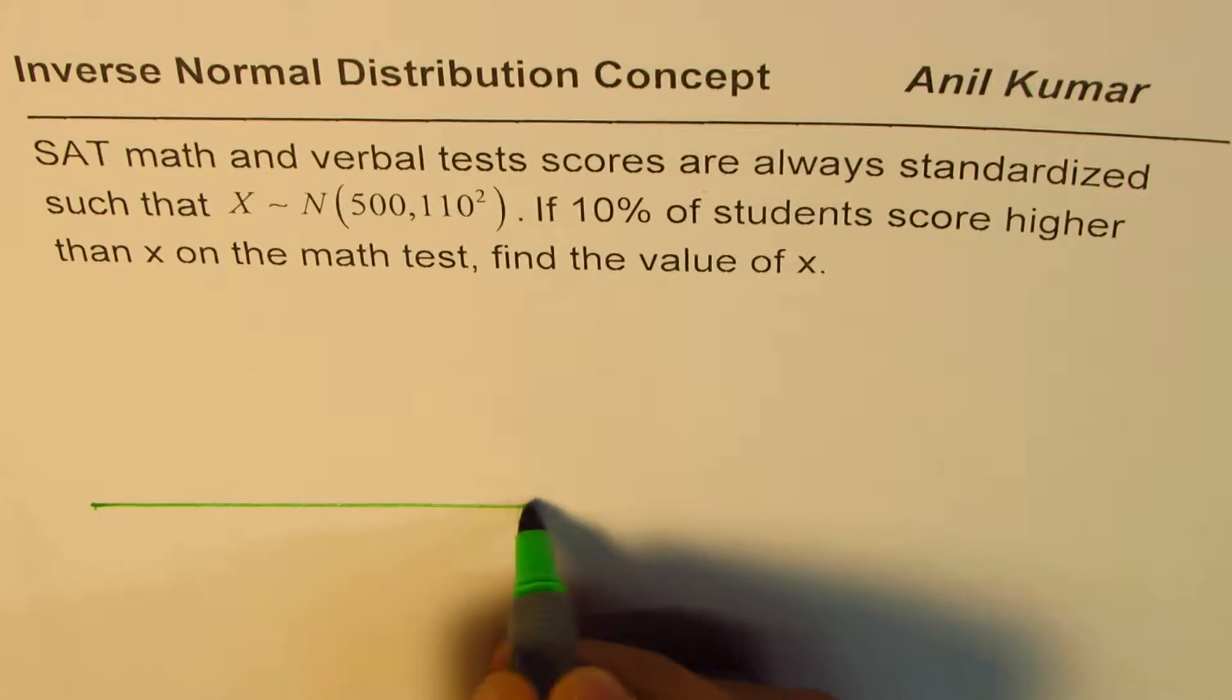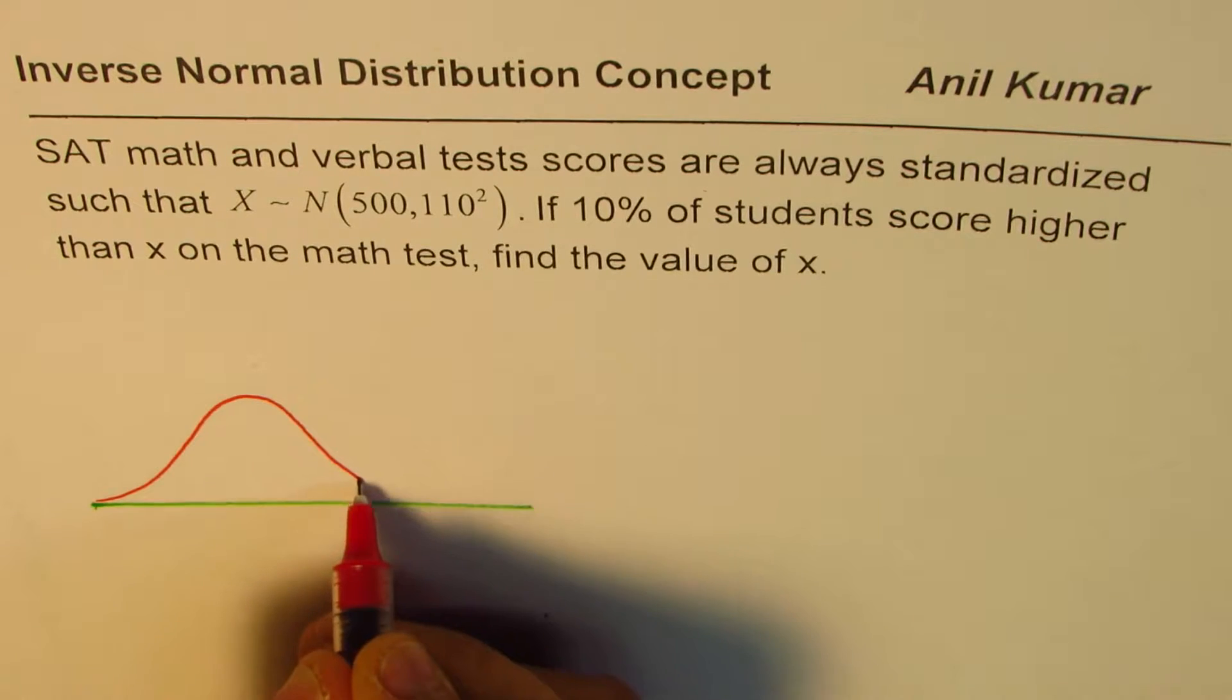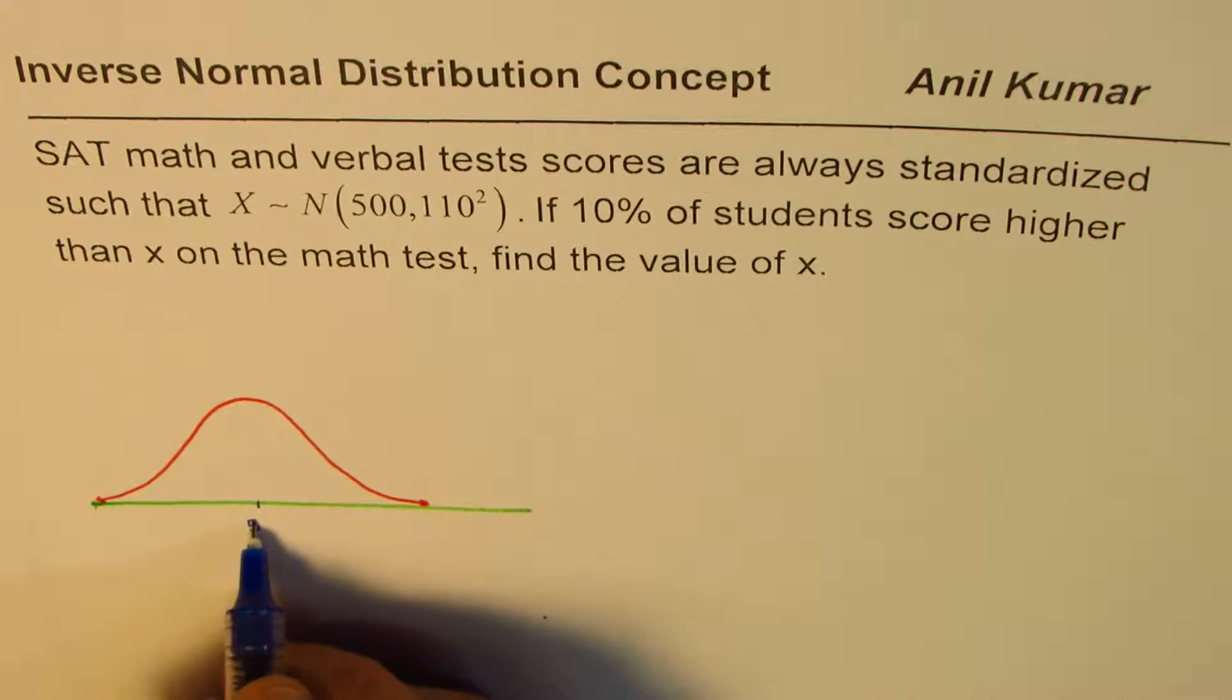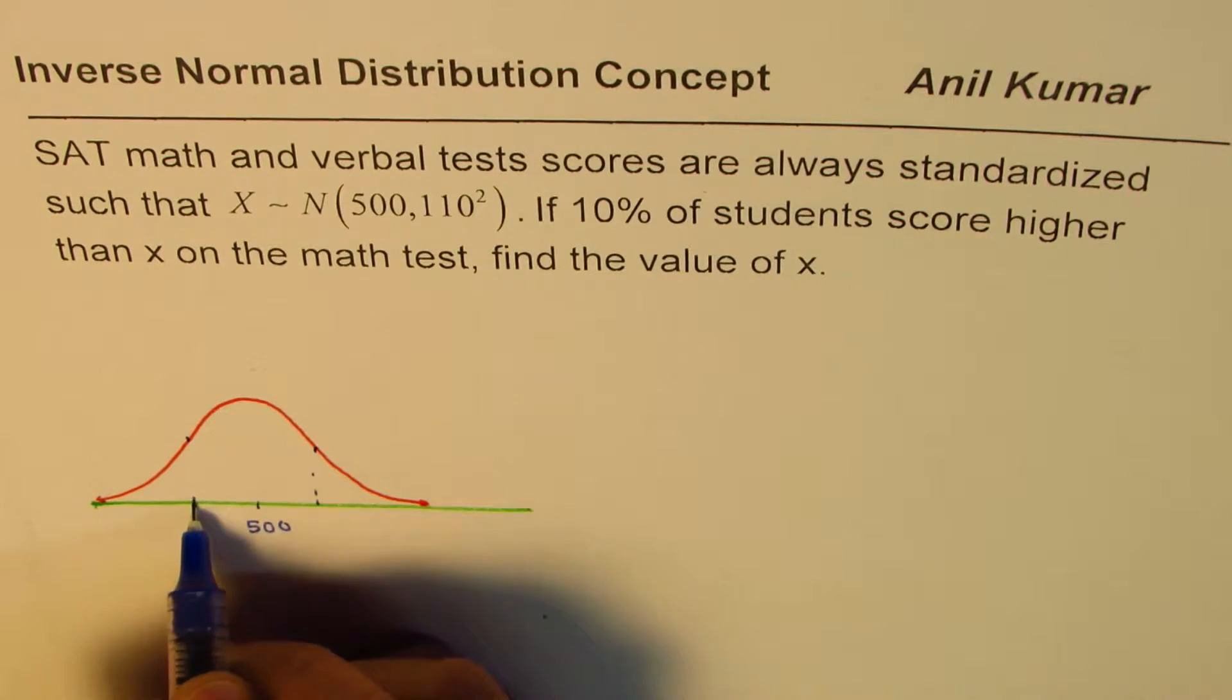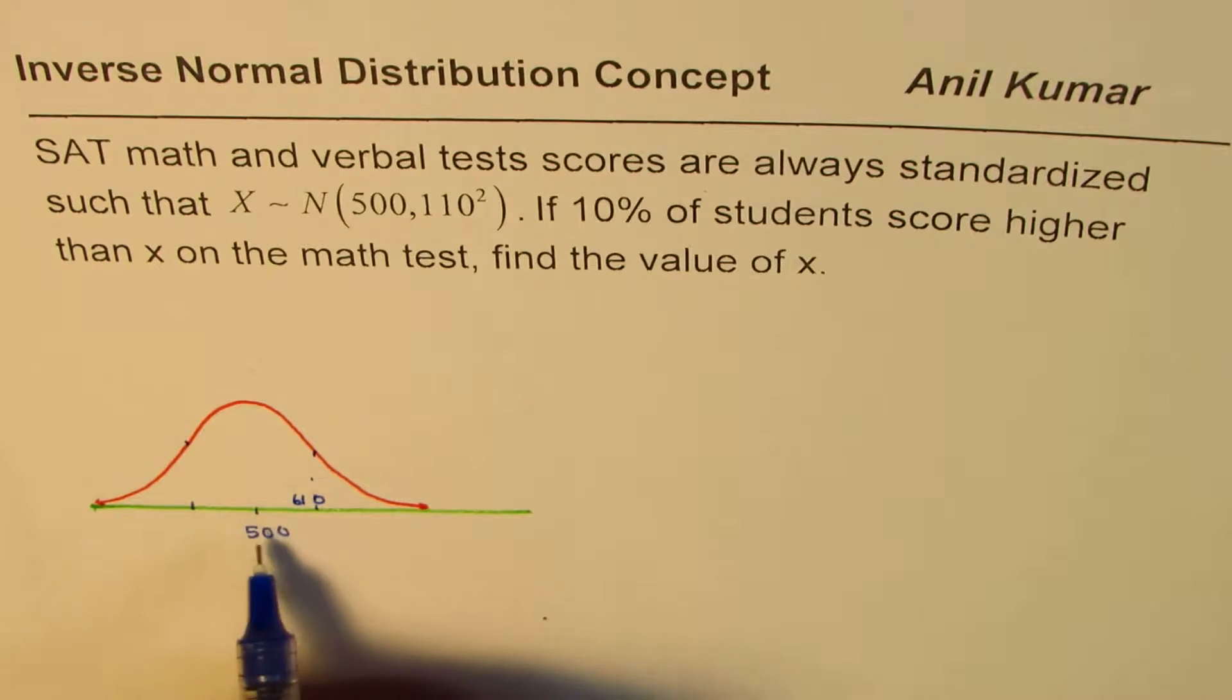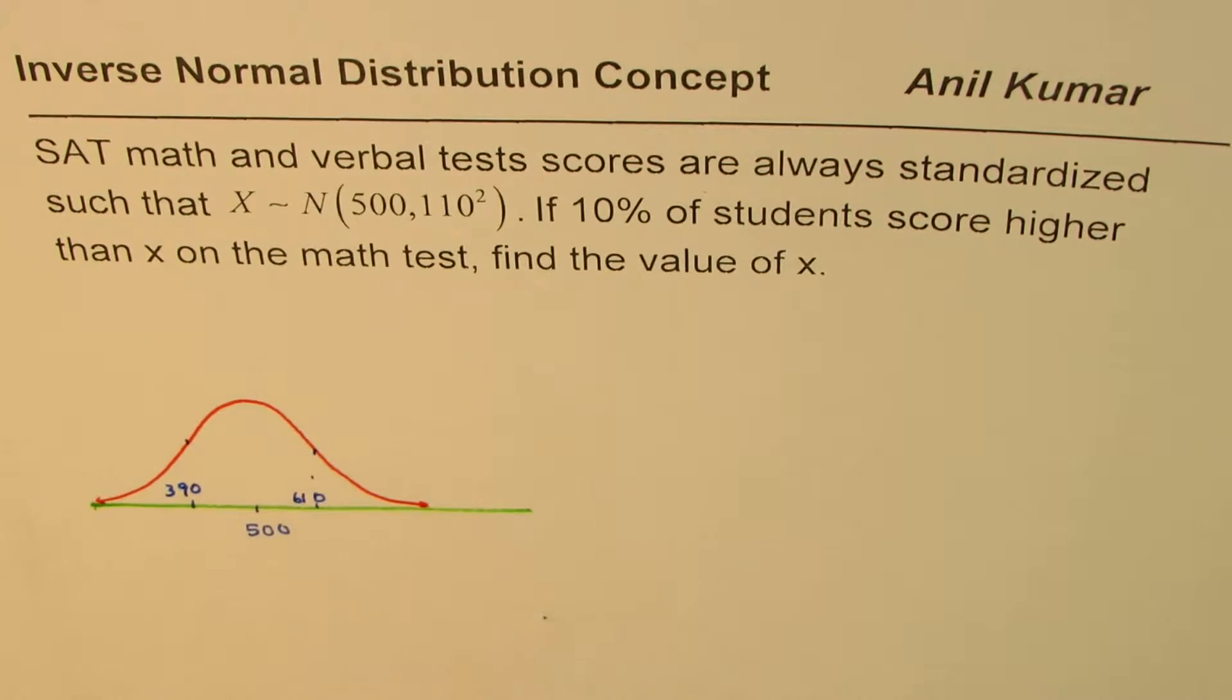So it follows a normal distribution, which is kind of like this, where the mean is 500. Let's say this is the mean, which is 500, and the standard deviation will be where the concavity changes on our diagram, 110. So 110 more will give us 610 marks here, and 110 less will be 390. So that is 110 on either side.